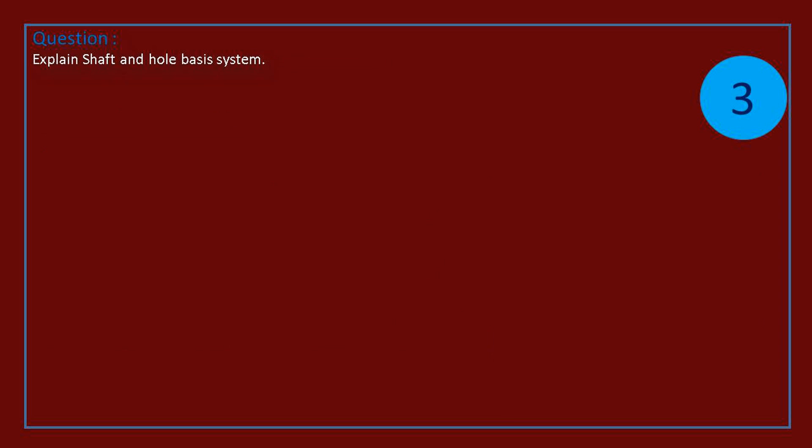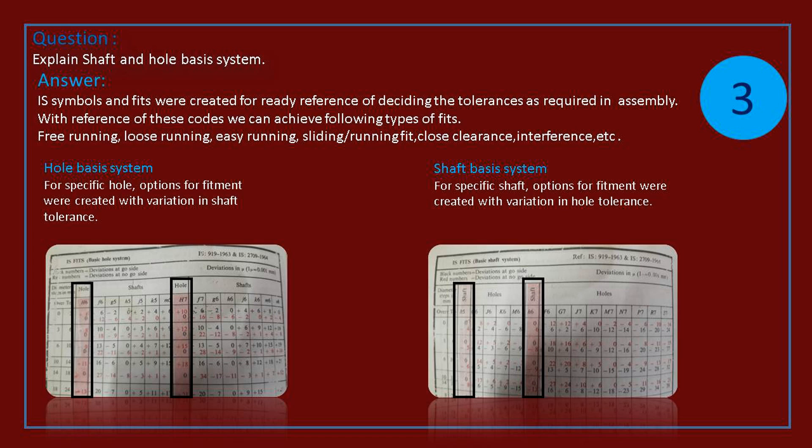Question: explain shaft and hole basis system. Answer: IS symbols and fits were created for ready reference of deciding the tolerances as required in assembly. With reference of these codes we can achieve following types of fits: free running, loose running, easy running, sliding running, fit close clearance, interference, etc.